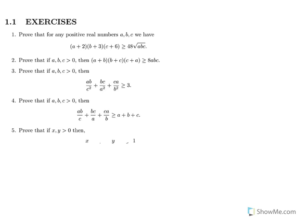Here we have some exercises about means inequalities. The first one: prove that for any positive reals A, B, C we have (A+2)(B+3)(C+6) ≥ 48√(ABC). Well, if we apply the AM-GM inequality for two terms, then (A+2)/2 ≥ √(2A).